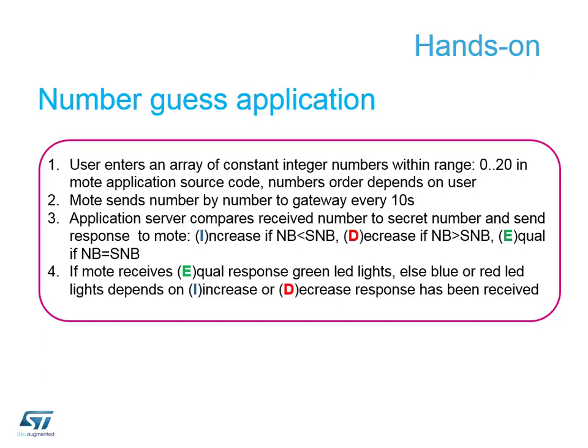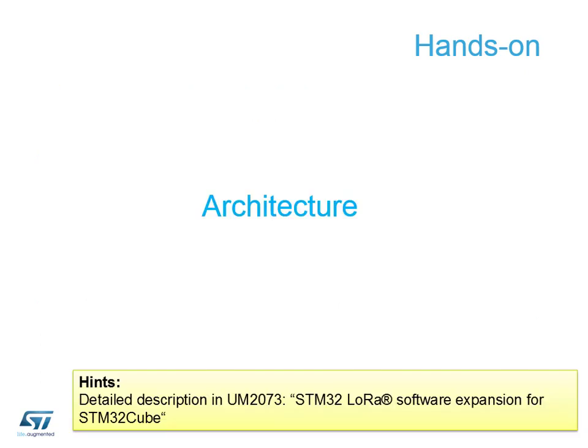We need to create an array of integers between 0 and 20 and store that in our node application source code. The node will send one of these numbers every 10 seconds. If the number is too low we get a blue LED and are told to increase; if too high, the red LED comes on and we're told to decrease. If we select the correct number, the green LED comes on confirming we match the saved number in the application server.